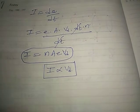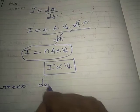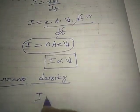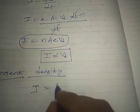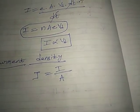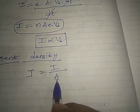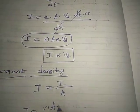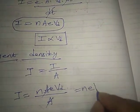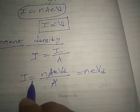Next, what is current density? Current density is indicated by the letter J. J is equal to current per unit area. J = I/A = nAeVd / A, so A cancels and J = neVd. This is the current density expression.